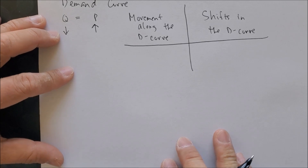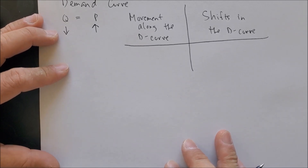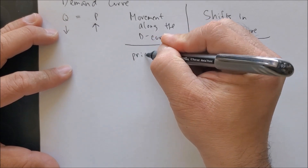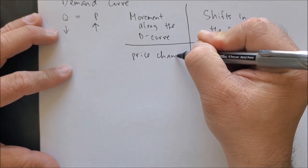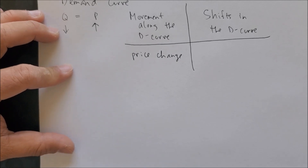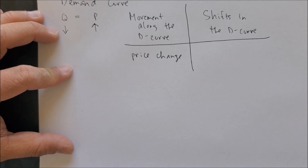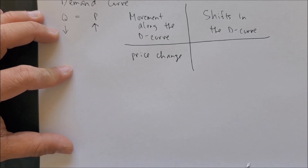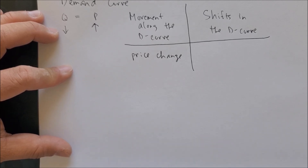The only factor that causes a movement along the demand curve is a price change. We are looking at the graph in today's terms — present time, not yesterday or tomorrow. Another assumption is that we will not focus on other goods except the good at hand. We call this ceteris paribus — all things being equal.